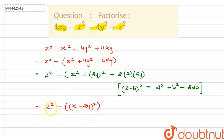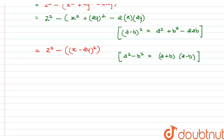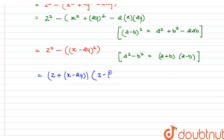Now this is of the a² minus b² type, so we can apply that identity also. Since a² - b² = (a + b)(a - b), by using this identity we can write the whole equation as (z + (x - 2y)) into (z - (x - 2y)).